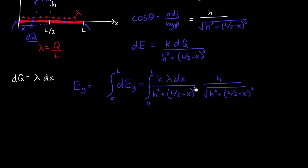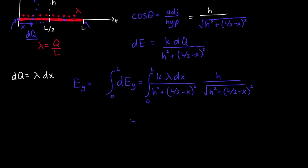Now we're just about ready to actually do this integral. We can simplify things a little bit by pulling out K is a constant, lambda is a constant, and H is a constant. So we've got K lambda H integral from 0 to L. And then in the numerator, we've got H squared plus L over 2 minus X squared, and we've got a square root of the same thing. So we end up with DX over H squared plus L over 2 minus X squared, all to the three halves.